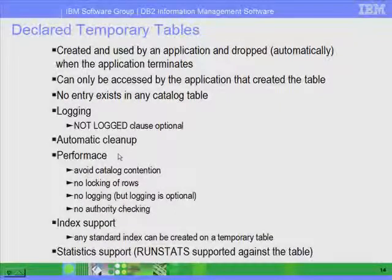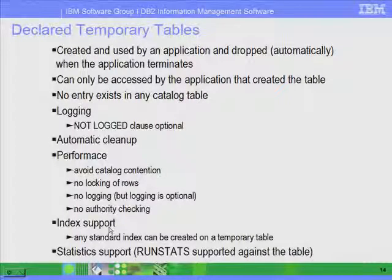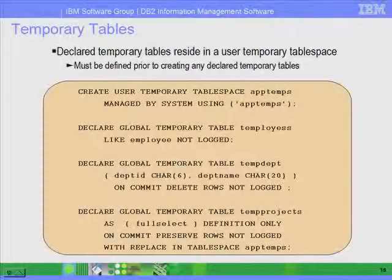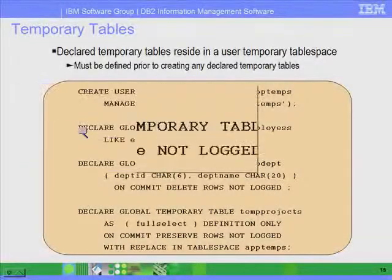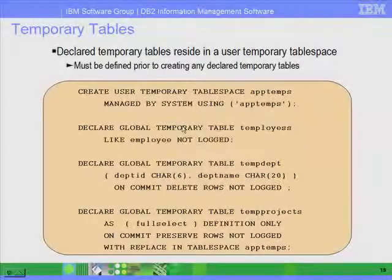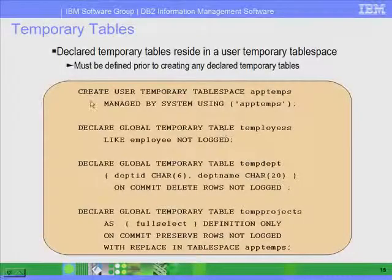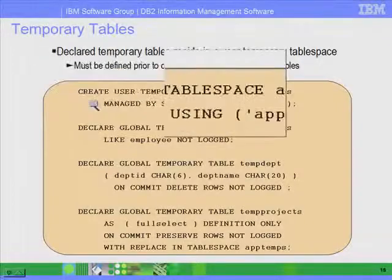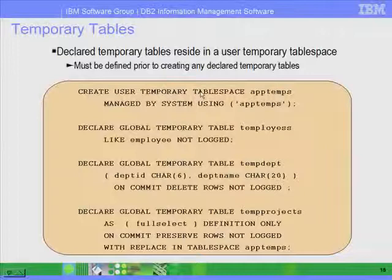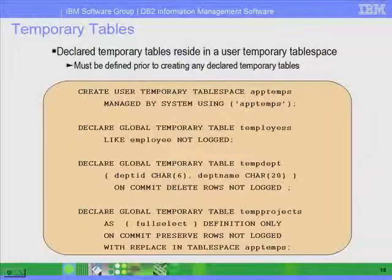There will be no logging — logging is optional. There will be no contention with the catalog, and no authority checking, so performance when you access this table will be very good. You can also create indices and run statistics on it, which we'll cover in a later lesson. To create a temporary table, you use the DECLARE GLOBAL TEMPORARY TABLE statement, and before doing that you have to create a user temporary tablespace. These temporary tables will reside on this user temporary tablespace, which is different from a system temporary tablespace like tempspace1.